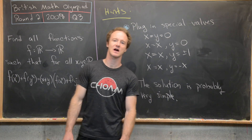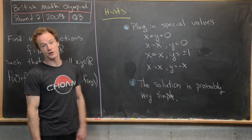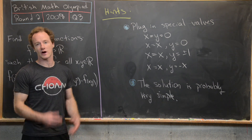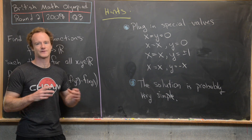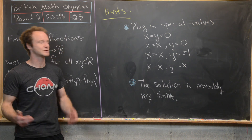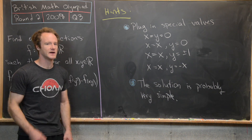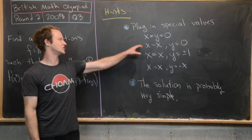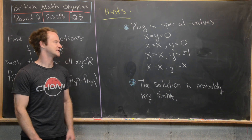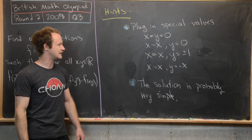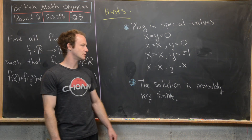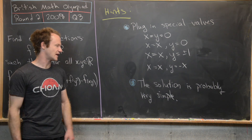Before we look at a solution, I've got a couple of hints. The first one is to plug in special values for x and y — this is a typical hint for functional equation problems. We want to try things like x = y = 0, x = y = 1, x free and y = 0, x free and y = ±1, or x free and y = -x.